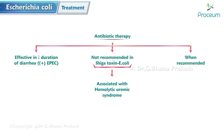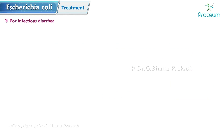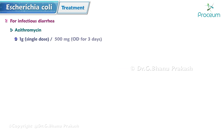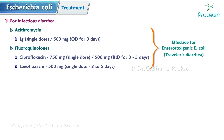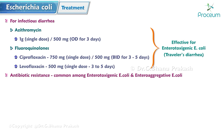When antibiotic therapy is indicated, azithromycin or a fluoroquinolone is generally appropriate. Azithromycin is given as a single 1 gram dose for patients without dysentery, or 500 mg once daily for three days. Fluoroquinolones include ciprofloxacin — a single 750 mg dose or 500 mg twice daily for three to five days — and levofloxacin 500 mg as a single dose or once daily for three to five days. Both azithromycin and fluoroquinolones have been effective for ETEC in treating traveler's diarrhea. Antibiotic resistance among ETEC and EAEC is common.